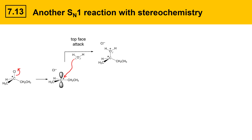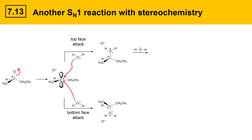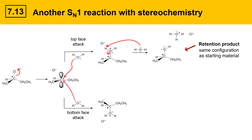If attack were to occur from the bottom face, the nucleophile comes in and makes a bond there, which gives the following product. Deprotonation of the top product results in the following neutral alcohol species in addition to an acid-base product. This is the retention product — it has the same configuration as the starting material. The OH group simply took the position of the chloride; there was no inversion of configuration at the stereogenic center in this product.